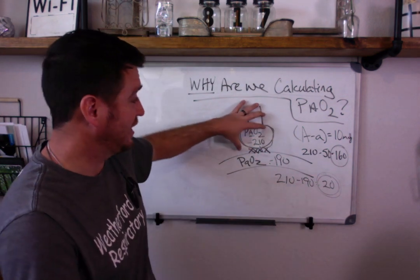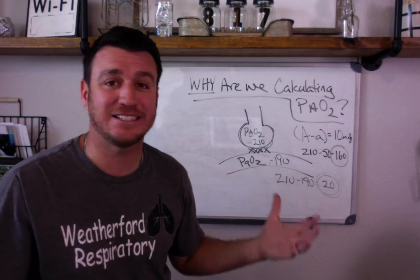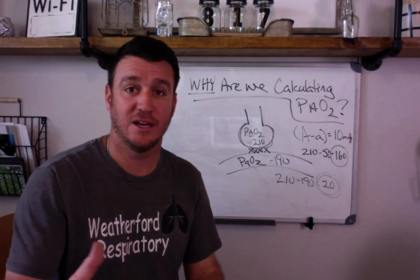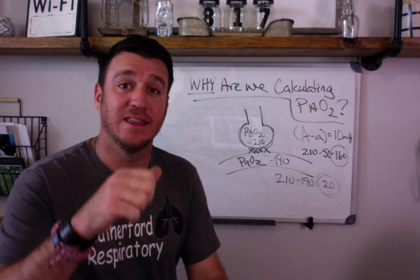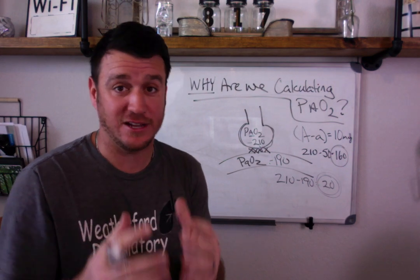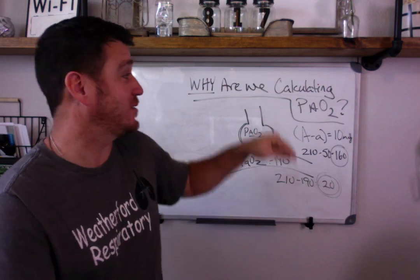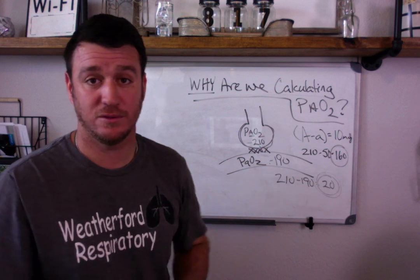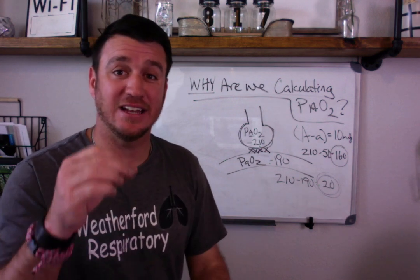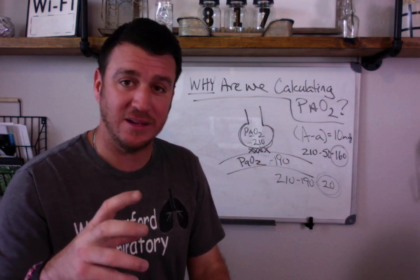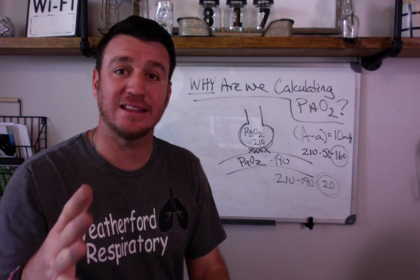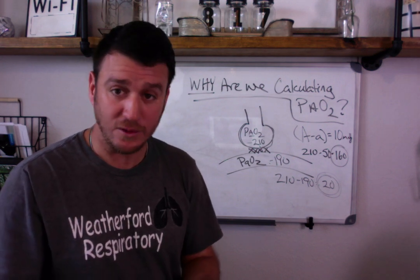Lots of oxygen in alveolar, not a lot in the arteries. That's the breakdown. That's all it comes down to. That's why you calculate the A to A difference. That's why you calculate the P big A O2. To understand and to give you a picture of the efficiency of gas diffusion at the alveolar unit.